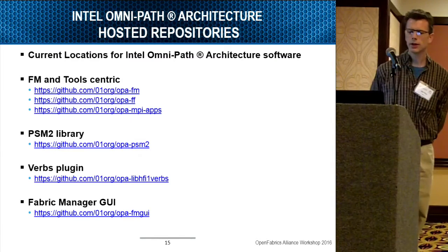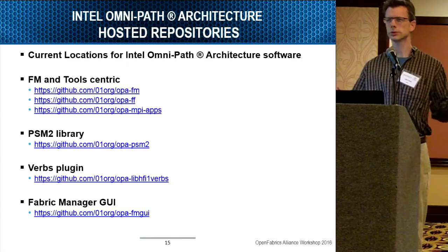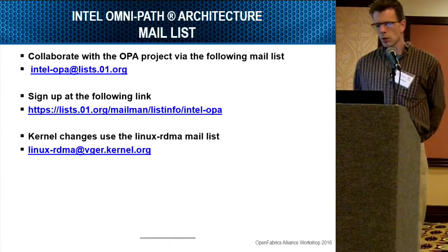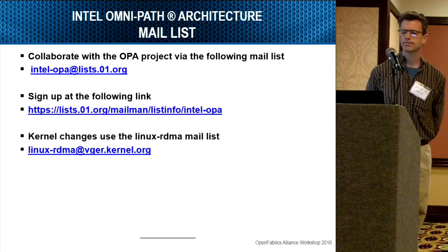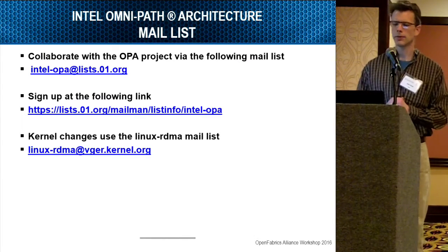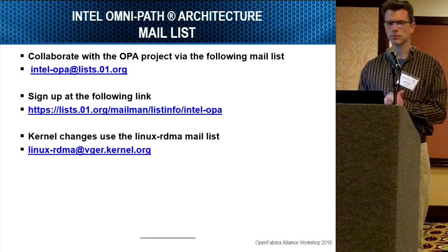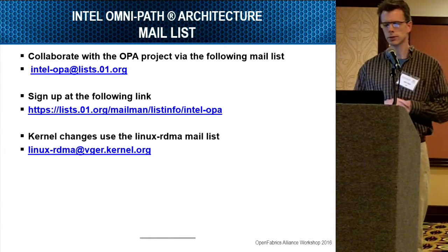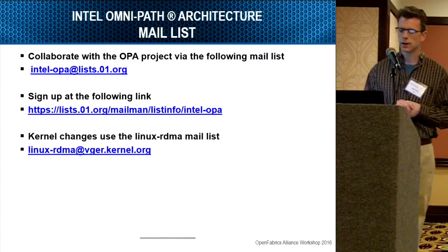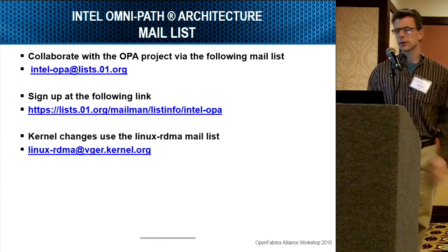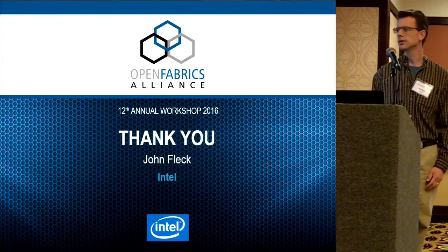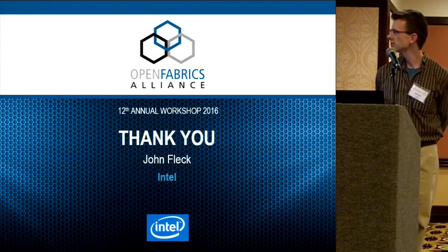Here's a quick summary of the GitHub repos I mentioned — a concise place to access all this information. We've also set up a mailing list so that people can communicate with most of us on the OmniPath project. It's listed here — feel free to join, comment, and contribute. That's what we're looking for. For kernel changes, we're sticking with the Linux RDMA mailing list. And that's all I have — any questions?